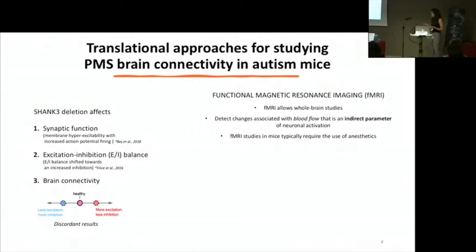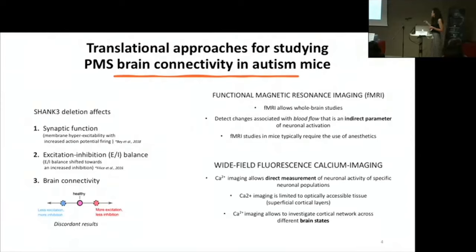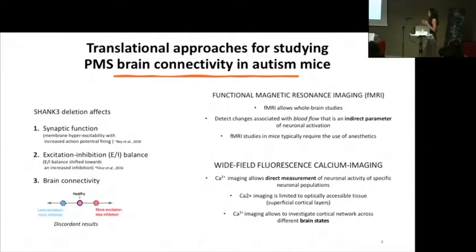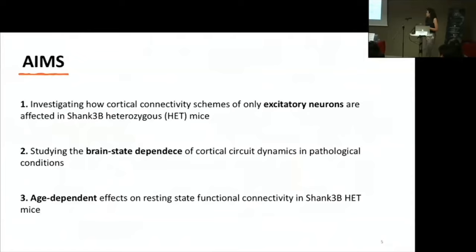All these points led us to use another technique: widefield fluorescence calcium imaging. Calcium imaging has the advantage of allowing direct detection of neuronal activity in specific neuronal populations thanks to the use of specific promoters, and since calcium is a cytoplasmic second messenger. The limitation is that you can only detect activity in superficial cortical layers, but at the same time you can investigate cortical networks across different brain states — in the awake state, but also at different levels of anesthesia — in the same animals and in the same day. This is why we use widefield fluorescence microscopy to investigate cortical connectivity in our model of PMS.